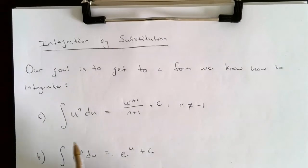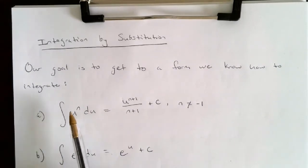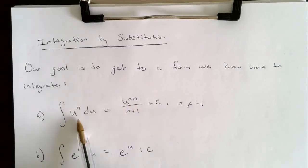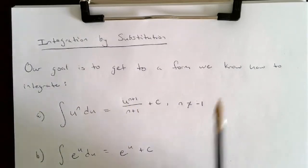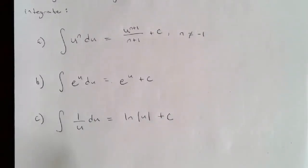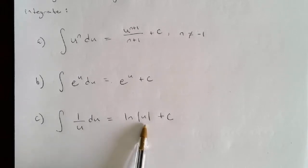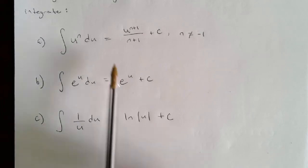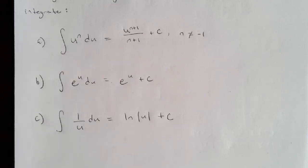We know how to take the anti-derivative of a base u to a power n: add one to the exponent and divide by that same new exponent, plus C, where n ≠ −1 (that's a special case). We know the integral of e^u du is just e^u + C. And the integral of 1/u gives us the natural log of the absolute value of u, plus C. If you're in a full calculus course, you'd also cover trig substitutions, but these are the three main ones here.